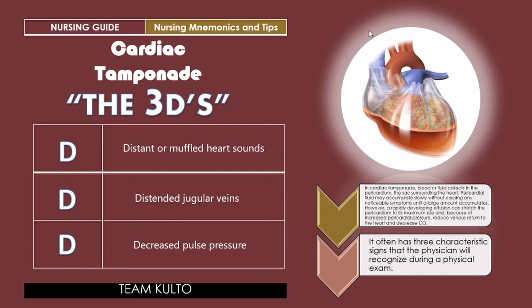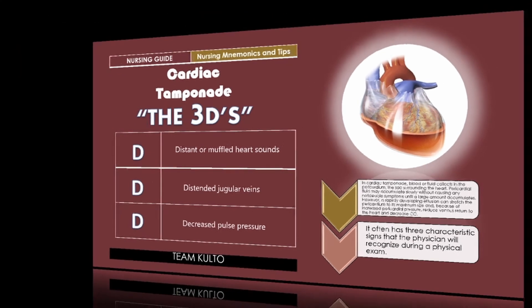All three of these signs can be observed physically. To quickly recap cardiac tamponade: there is fluid in the pericardium — the sac that protects our heart. Initially you may not notice the effects, but once there is too much fluid accumulation in the pericardium, that's when you will notice the 3Ds. What are your 3Ds? You have distant or muffled heart sounds, distended jugular veins, and decreased pulse pressure. This is your cardiac tamponade nursing mnemonics and tips. Thank you so much for watching — I hope you learned something.